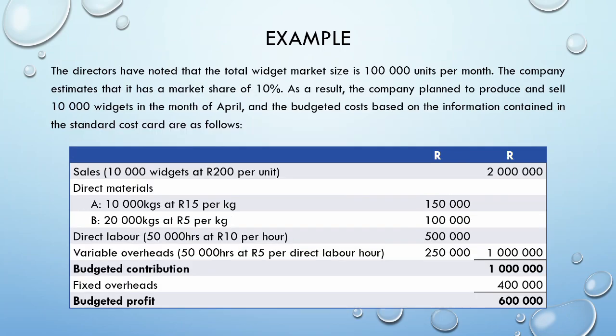The directors in this example have noted that the total widget market size is 100,000 units per month. The company estimates that it has a market share of 10%. As a result, the company plans to produce and sell 10,000 widgets in the month of April. The budgeted costs based on the information contained in the standard cost card are as follows.